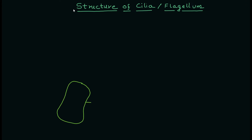Let's start with the basic structure, starting from the basal body. The basal body is the region of the flagellum or cilia that is going to provide support to this particular cell structure.